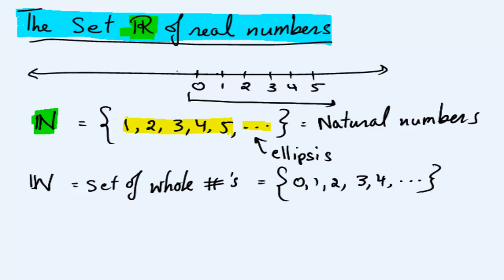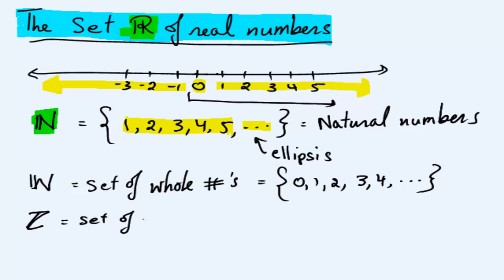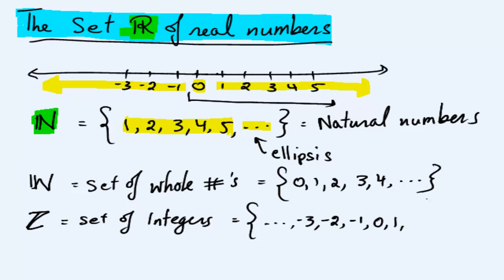We still haven't figured out every number on the number line. We also have the negatives: negative one, negative two, negative three and so on to the left. If we put together all these positive numbers — the natural numbers — all the negatives, and zero, we get what is called the set of integers. We use a special symbol for this.